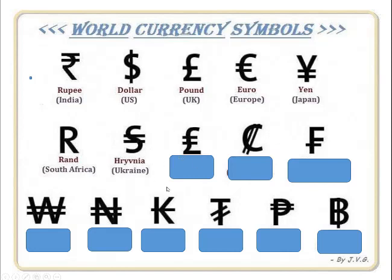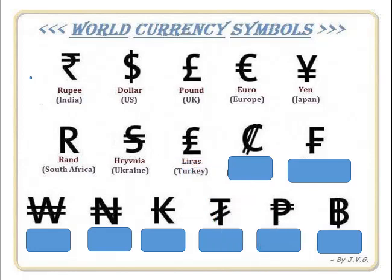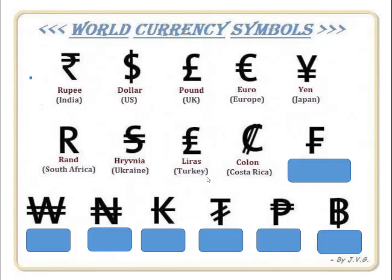The next one looks like the pound, so obviously there used to be a connection between these two countries. It's actually Turkish money — the lira from Turkey. The one after that is in between North and South America. This is actually the colón from Costa Rica — Costa Rican money called the colón.